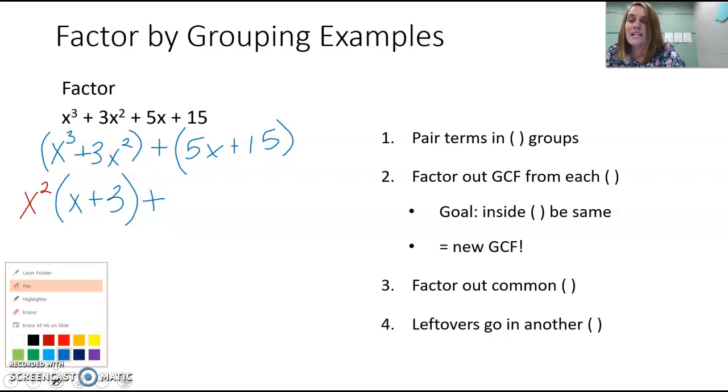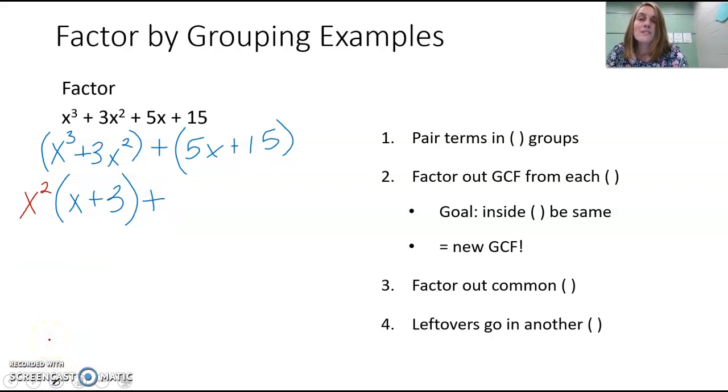Plus, if we look at our second group, 5x + 15, the GCF of those two terms would be 5. 5 goes into 5x and 5 goes into 15. 5x divided by 5 would just be x, and 15 divided by 5 would be 3. And so what we want, our goal, and what we have here, is that what's inside our parentheses is the same. Both parentheses have x + 3. So that actually becomes our new greatest common factor.